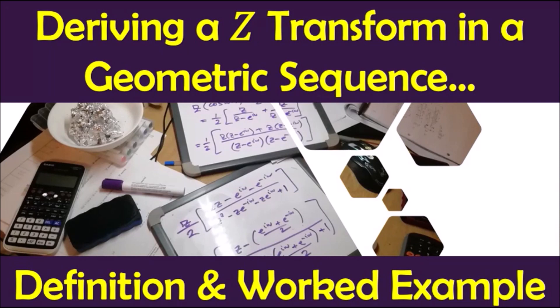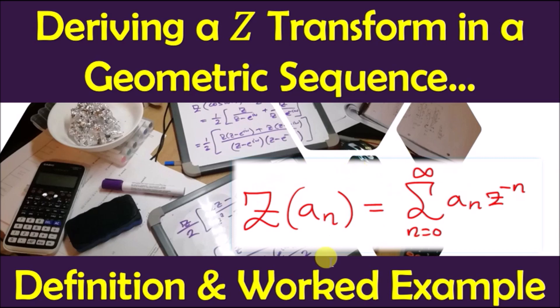Here we'll be looking to perform a Z-transform in a geometric sequence. The key idea is to firstly define the Z-transform. You can think of it as simply a function at some point, let's say a_n, where it's written as an infinite sequence. We can say that the sum of a_n·z^(-n) is the full definition.